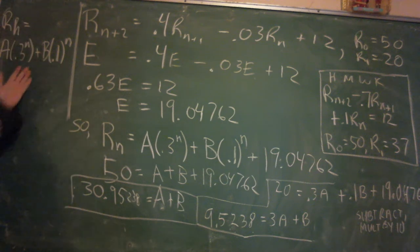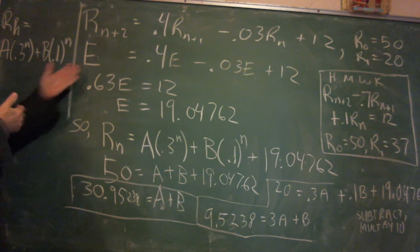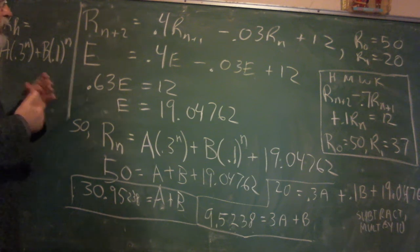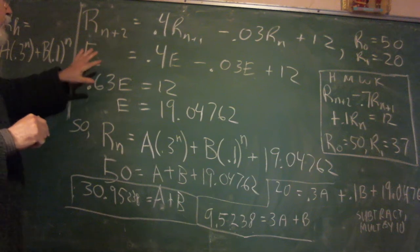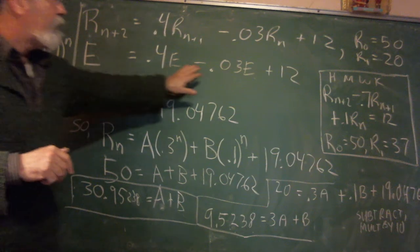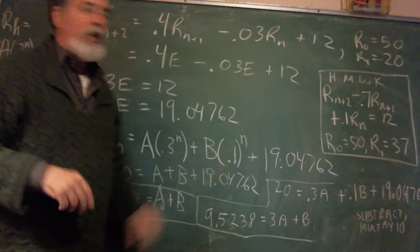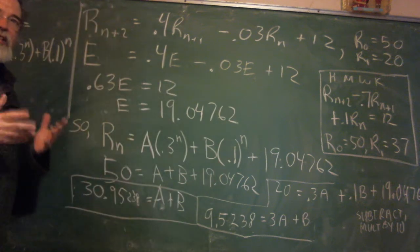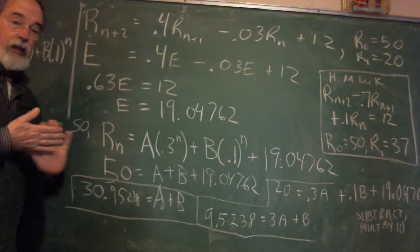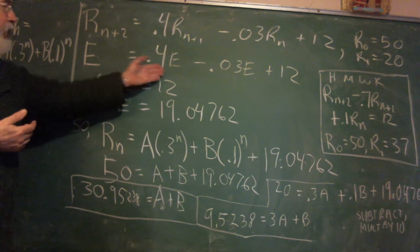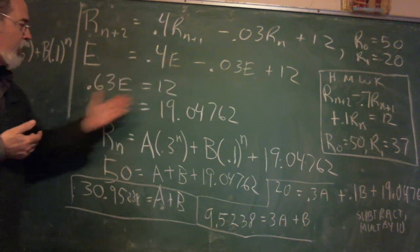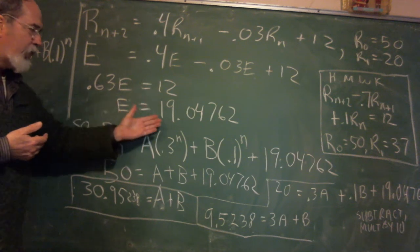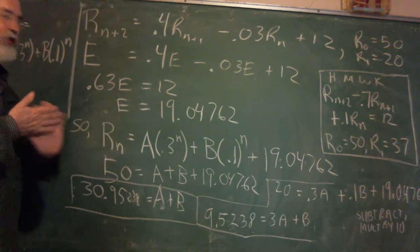Continuing along. We've got the homogeneous solution. Now we've got to do the equilibrium. So E doesn't change. Whichever time step you're on, it's still E. So I have E equals 0.4 E minus 0.3 E plus 12. Now we've got to find the number E that makes this happen, which you can check. So anyway, subtracting 0.4, adding 0.03, I get 0.63 E equals 12. Dividing by 0.63, I get something bigger than 12. This 19.04762.